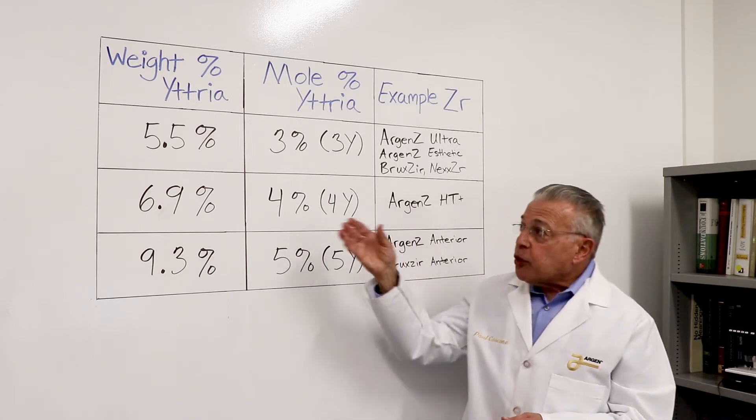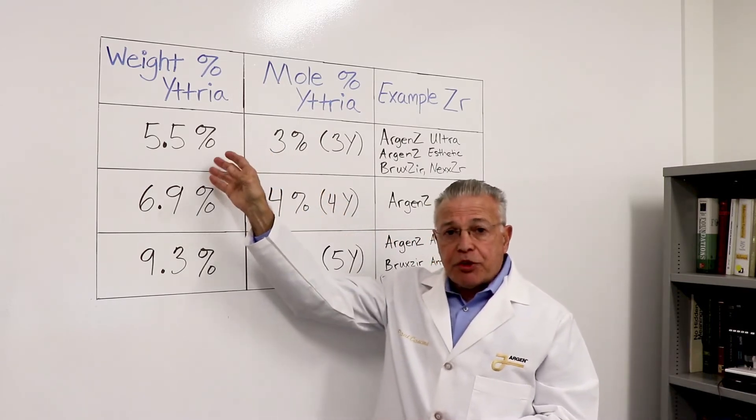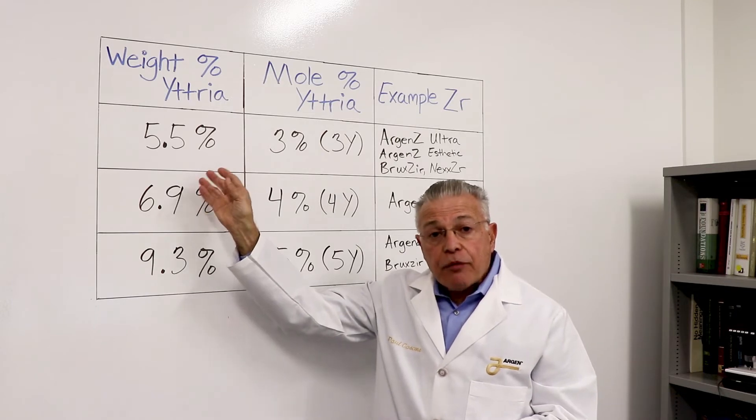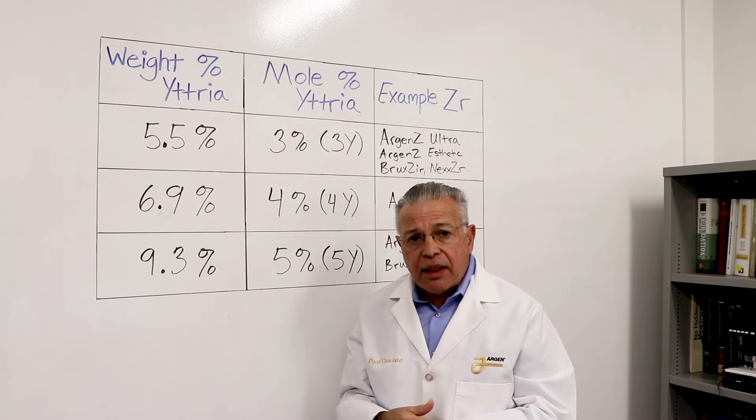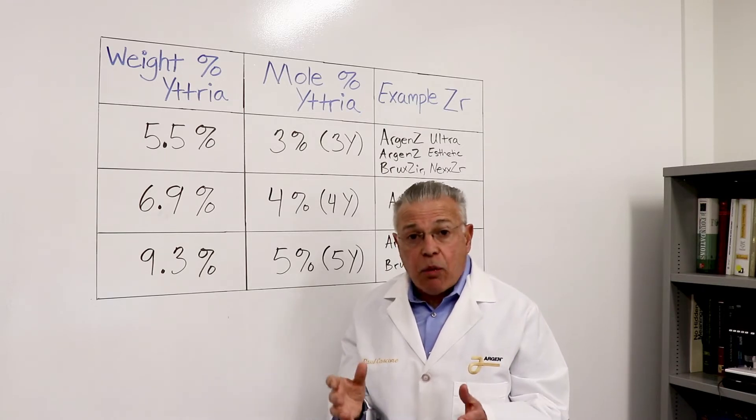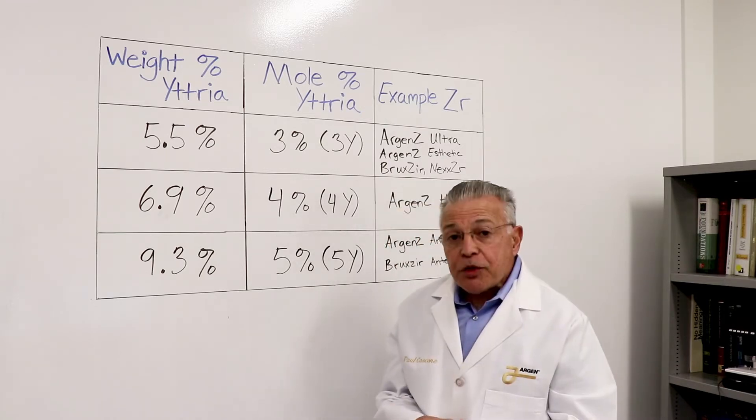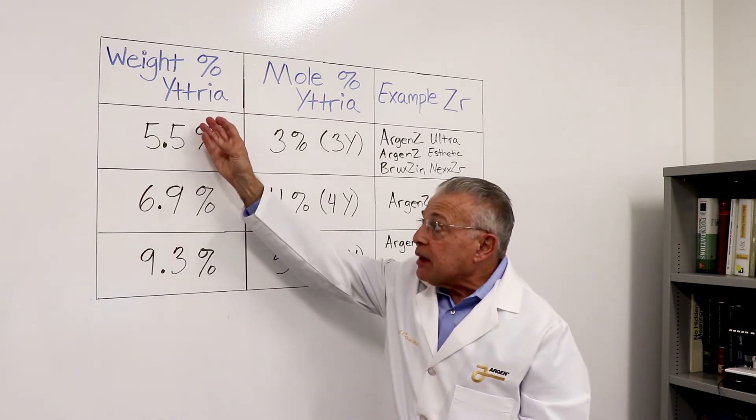We generally will talk about weight percent yttria when we do show the yttria content. For those of you that have seen my other lectures, you know that the ISO standard for zirconia does not require any compositional information. In most cases, you'll see a weight percent yttria.